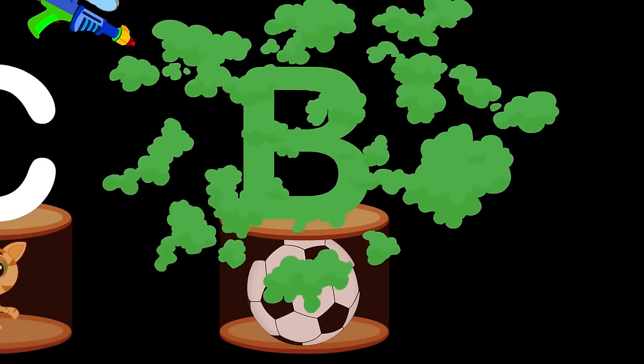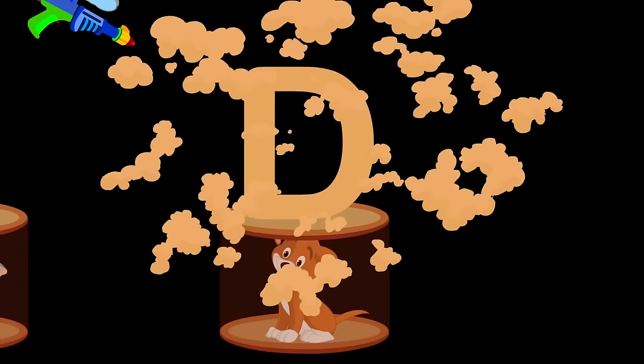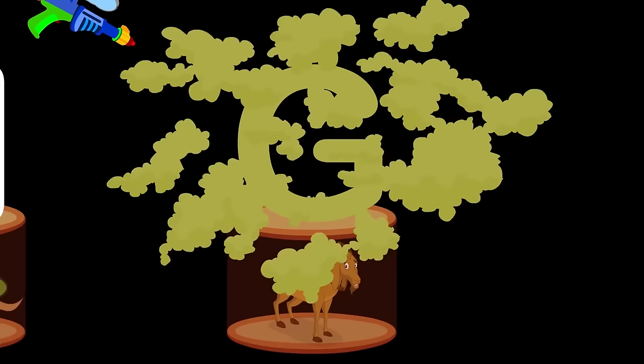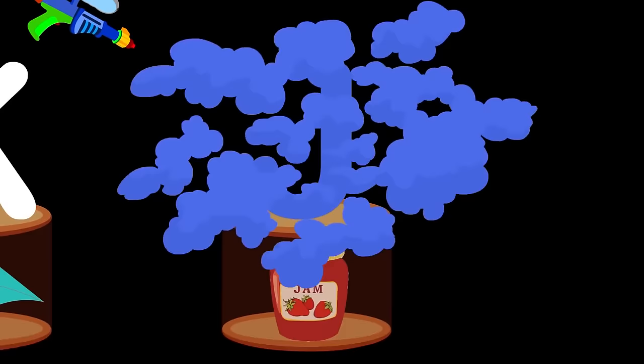A for apple, a-a-apple. B for ball, b-b-ball. C for cat, c-c-cat. D for dog, d-d-d-d. E for elephant, a-a-elephant. F for fish, c-c-c-fish. G for goat, c-c-c-cat. H for rat, c-c-cat.